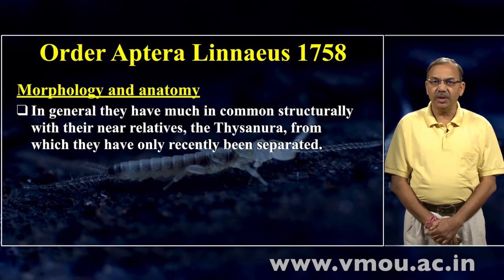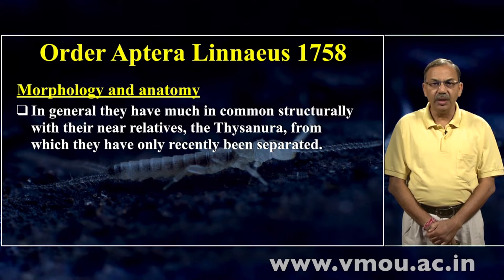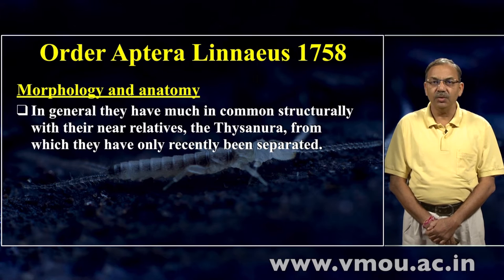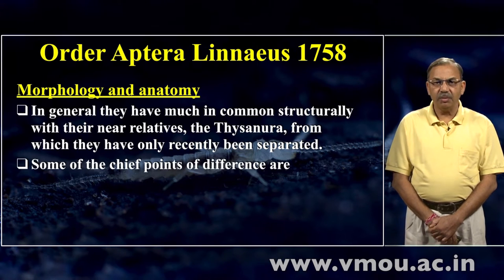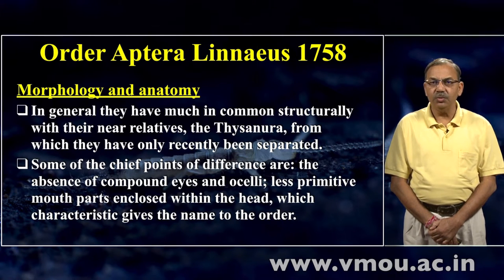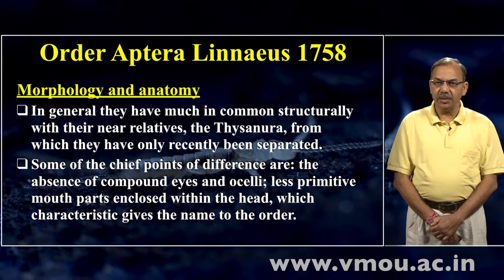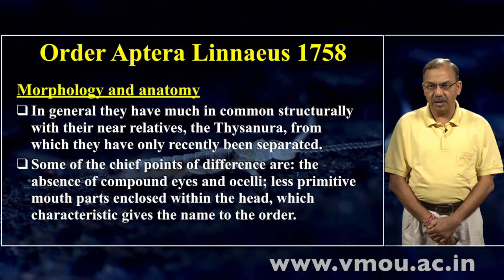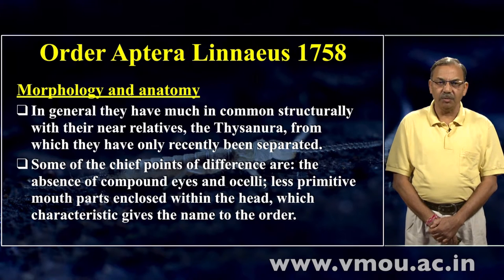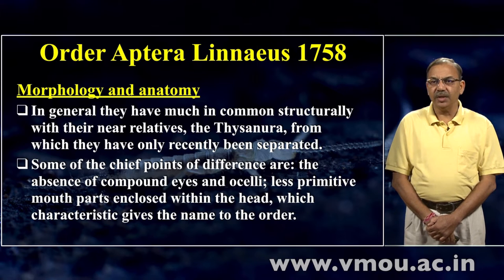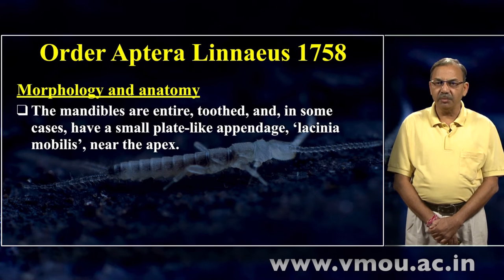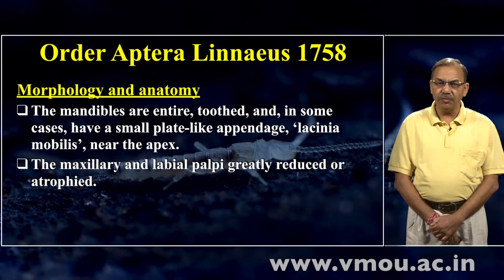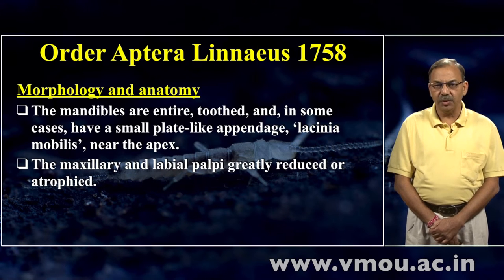इनमें much in common structurally with their near relative the Thysanura है — Thysanura हम आगे पढ़ेंगे। इनकी काफी सारी संरचनाएँ Thysanura से मिलती-जुलती हैं। प्रमुख अंतर यह हैं: compound eyes और Ocelli absent हैं; less primitive mouth parts हैं — mouth parts और अधिक प्राथमिक तौर के हैं और enclosed within the head हैं। Thysanura में mouth parts बाहर आते हैं, यहाँ head के अंदर होते हैं — this characteristic gives the name of the order। Mandibles are entire or toothed and in some cases have a small plate-like appendage lessena mobilis near the apex। Maxillary and labial palps are greatly reduced or atrophied।